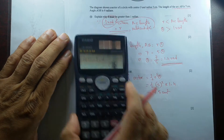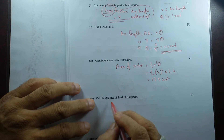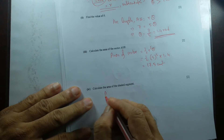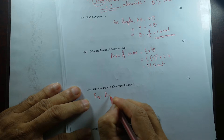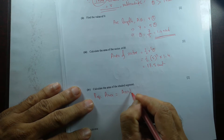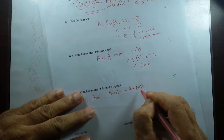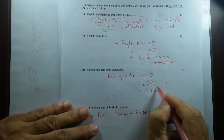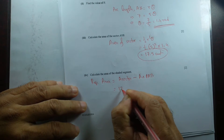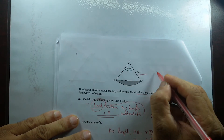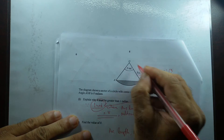Now calculate the area of the shaded region, which is the segment. The required area equals the area of the sector minus the area of the triangle. The sector area is 17.5, so we subtract the triangle area.